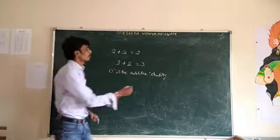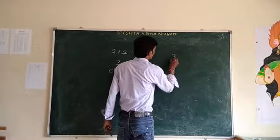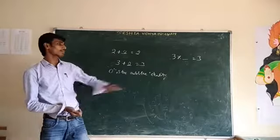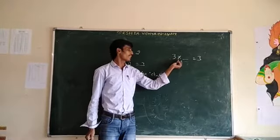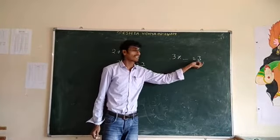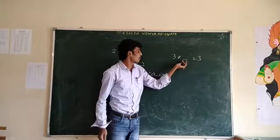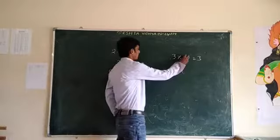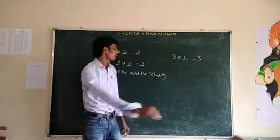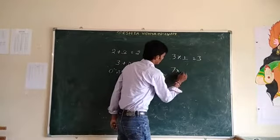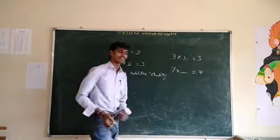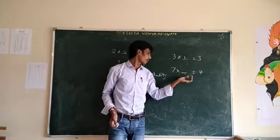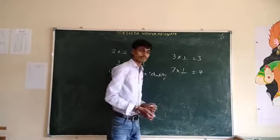Next example. Fill the blank: 3 plus blank is equal to 3. And 7 into blank is equal to 7. Which number satisfies it? Again 1. By observing these two examples, we conclude that when you multiply any number with 1, the result will be the same.